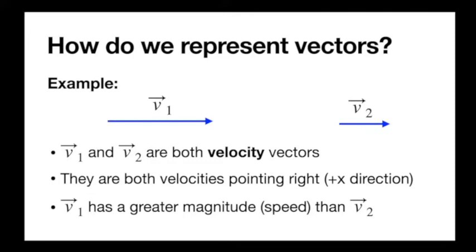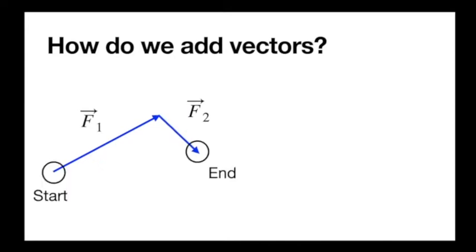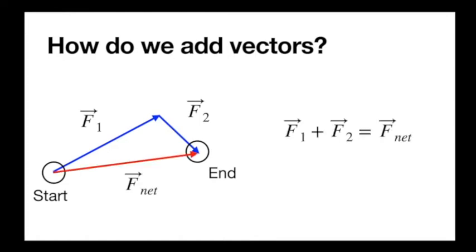Graphical representations also give us a good way to combine vectors. So how do we add vectors graphically? I have two force vectors, f1 and f2. We say tip to tail — tip being where the point of the arrow is and tail being the other end. We just stack them together. The result — the sum of the two, which we'll call f net — is the new vector that goes from the start of the first one to the end of the last one.